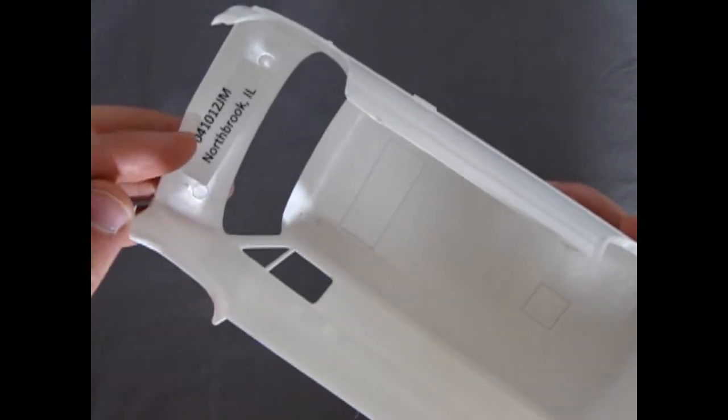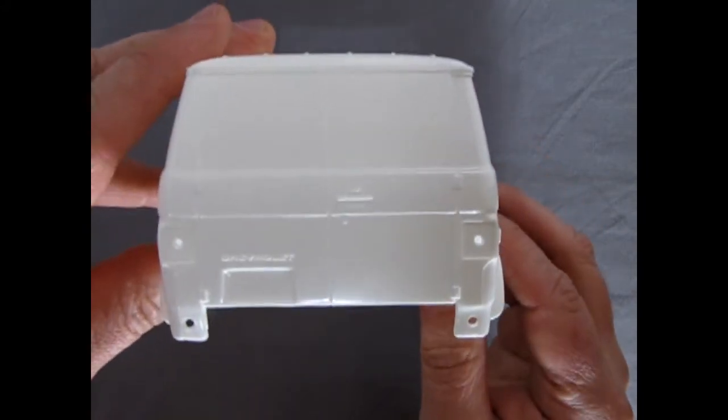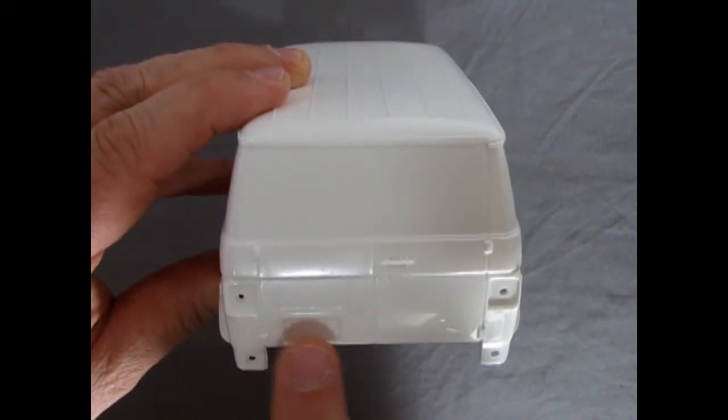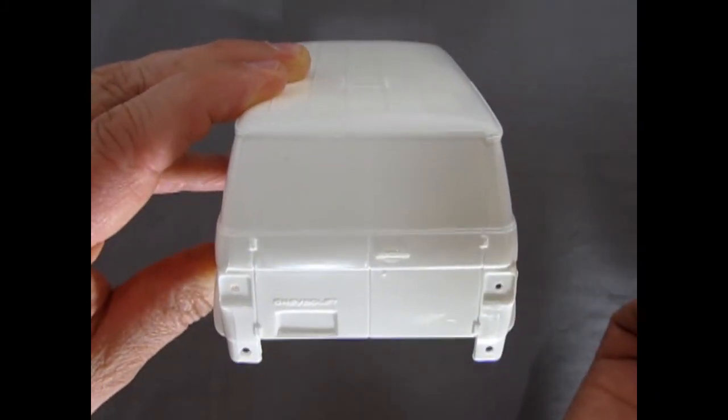This model was made in Northbrook, Illinois. And then if we look out the back here we've got the perfect profile for a 70s Chevy van with the Chevrolet script right over top of the license plate. And again wonderful door lock handles.